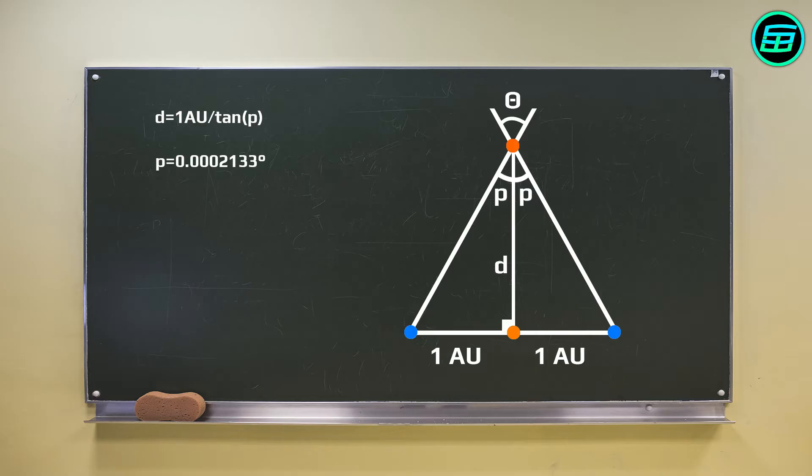Since it's the nearest star to the Sun, it has the largest parallax angle. Stars that are further away have even smaller parallax angles.